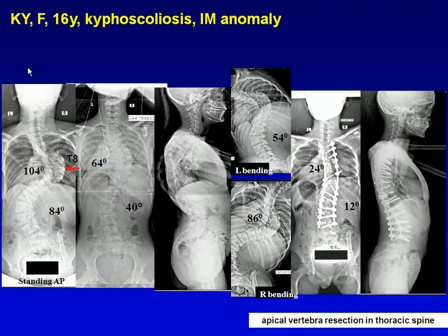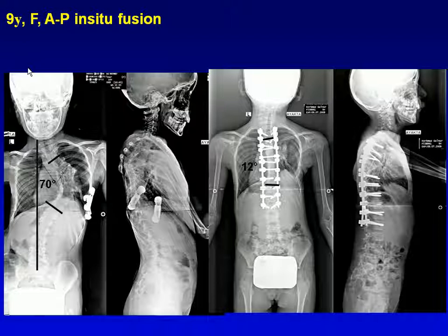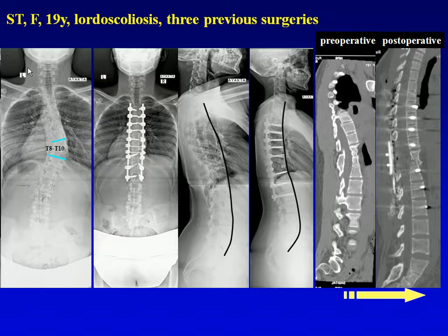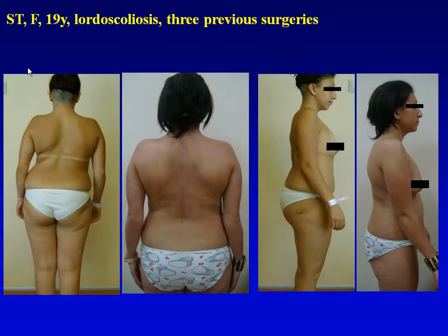You can see the post-operative x-rays. He had four previous surgeries. Now with very severe thoracic scoliosis, PVCR was performed — shown in pre- and post-operative clinical pictures. In another very difficult case with thoracic lordoscoliosis, PVCR was done. You can see the pre- and post-operative 3D reconstruction. We achieved very good sagittal alignment and clinical outcome.